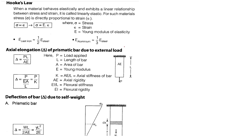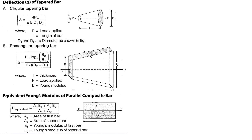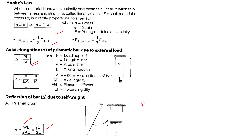Quick revision: Hooke's law states stress is directly proportional to strain within the elastic limit. Elongation due to self-weight is WL/2AE. The elongation formula is PL/AE.